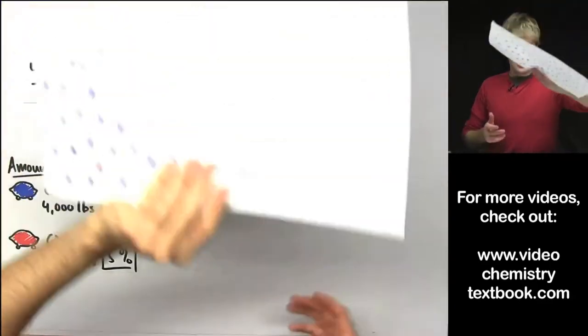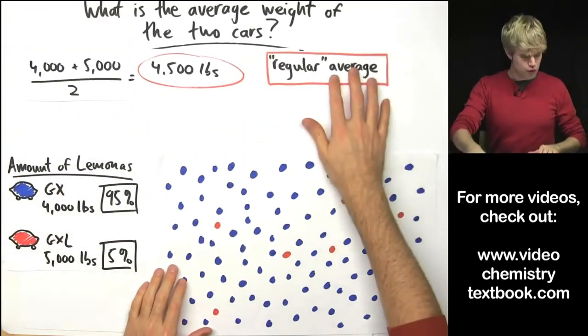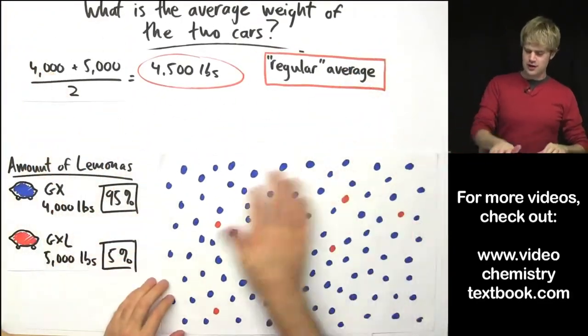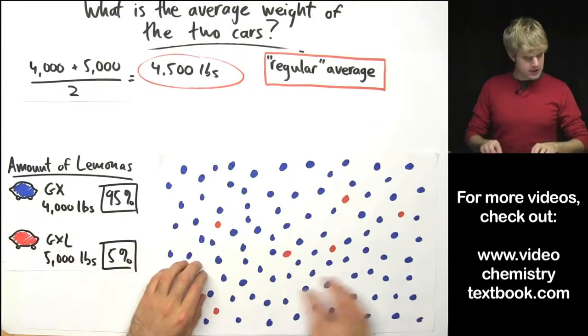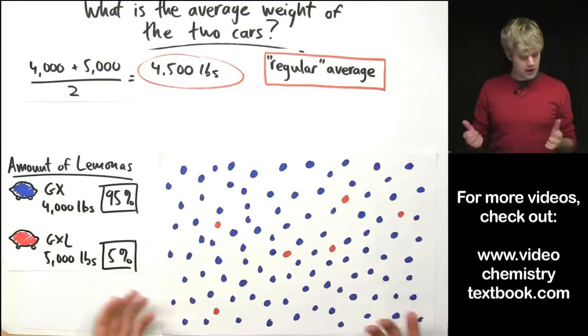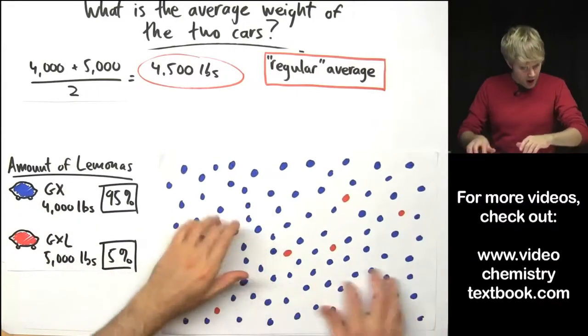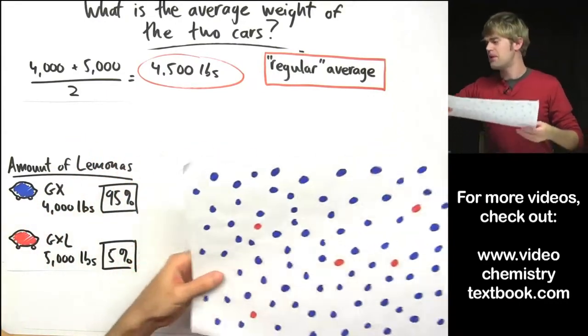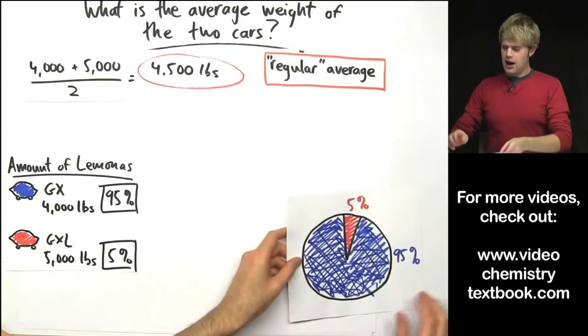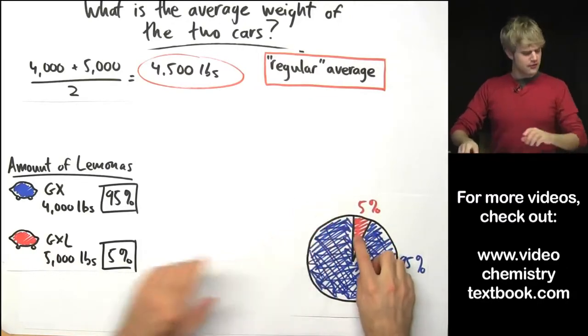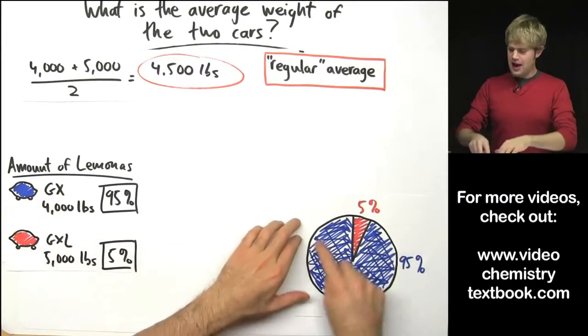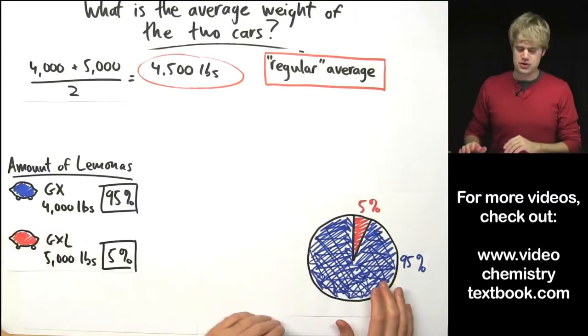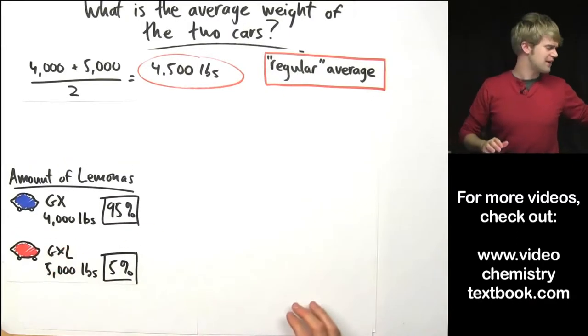We could show this graphically. If we were to pull 100 random Lamonas off the street, all the blues would be the GXs whereas the ones in red show the GXLs. Obviously there are many more but this is a hundred taken at random and we can see the same thing on a pie chart with just 5% GXLs and the vast majority, 95% are GXs.